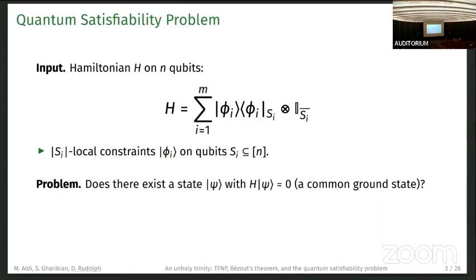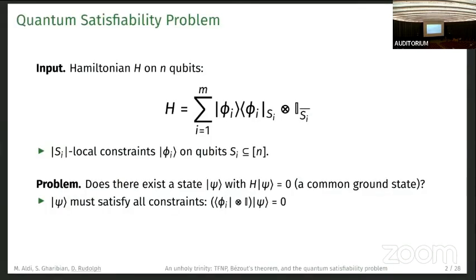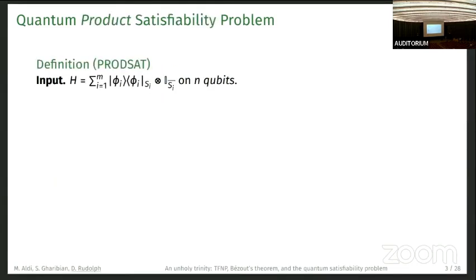The problem is to check does there exist a state ψ such that H times ψ is zero, a common ground state. For this to hold, ψ must satisfy all constraints. This equation here must be satisfied.